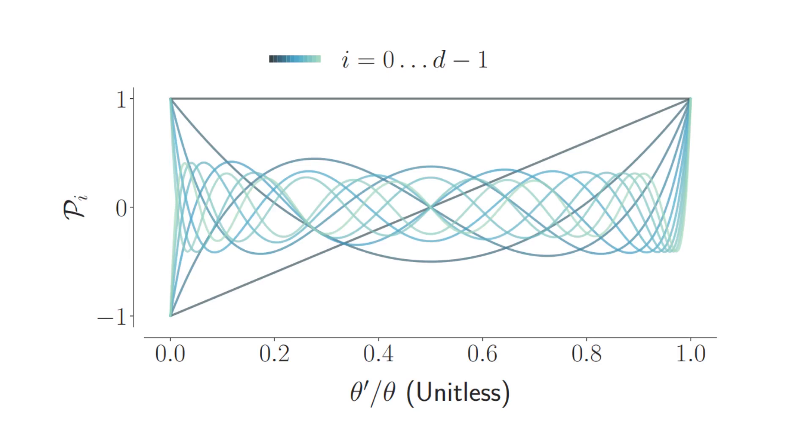It orthogonally represents a sliding window of history as a linear combination of Legendre polynomials, making it very resource-efficient with respect to the length of the window.